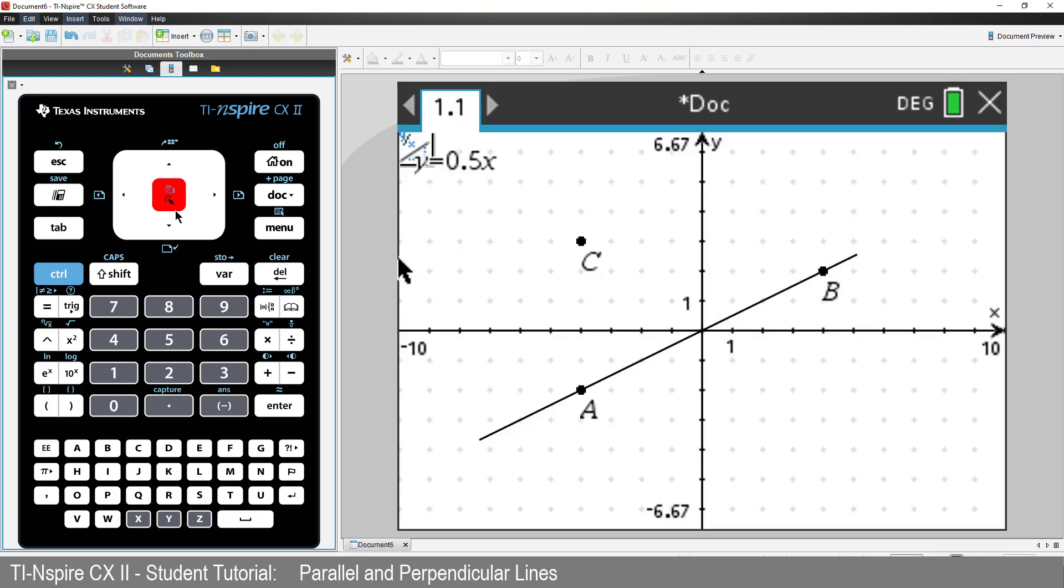Now click on the line. The slope measurement is attached to the mouse. Move it off to the left and click. Press Escape to release the slope measuring tool.